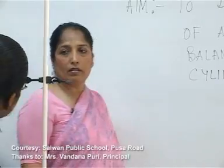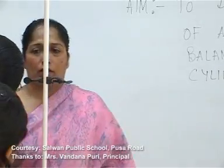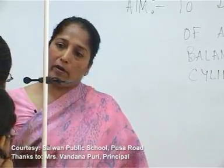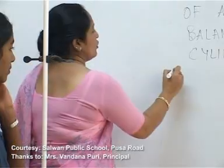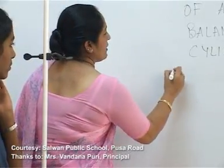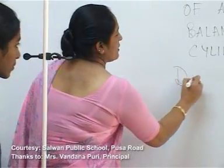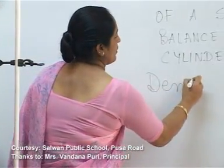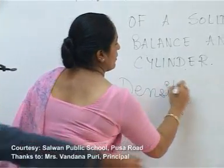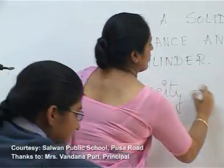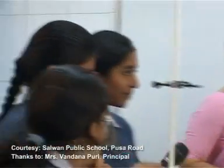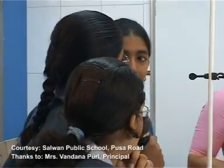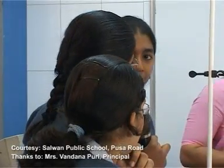Weight is the product of mass and acceleration due to gravity. Mass is the quantity of matter contained in a body. So density is equal to mass upon volume.